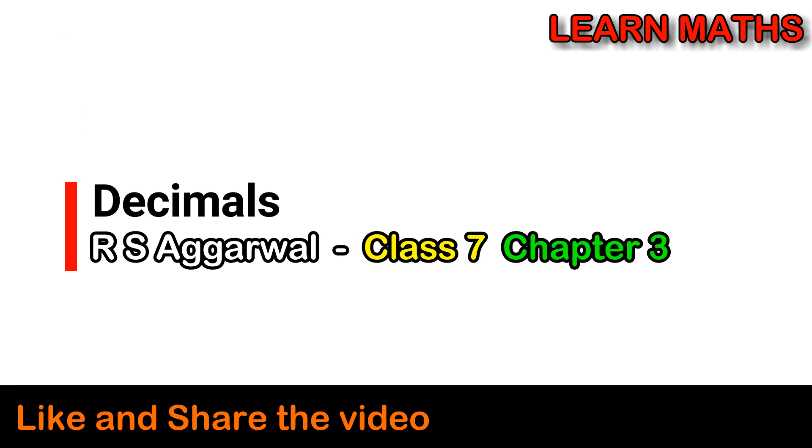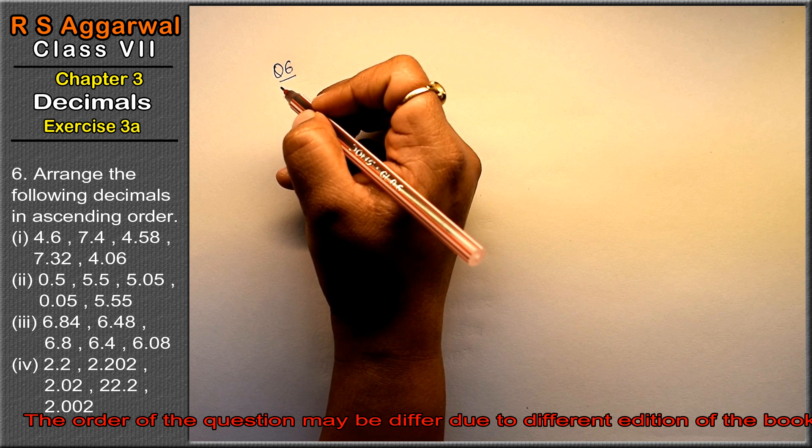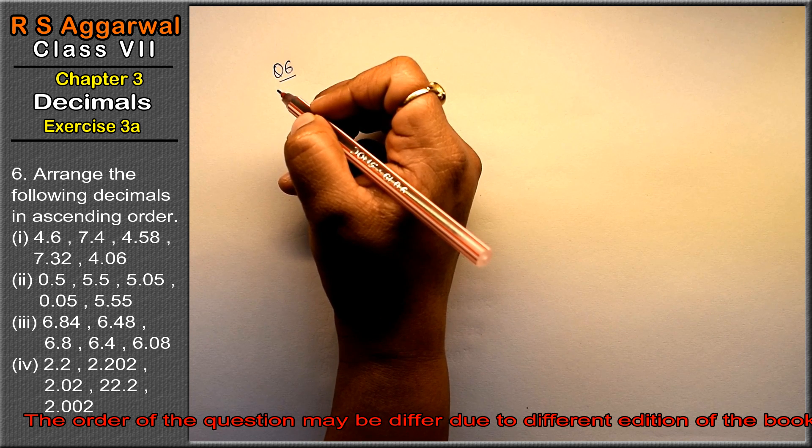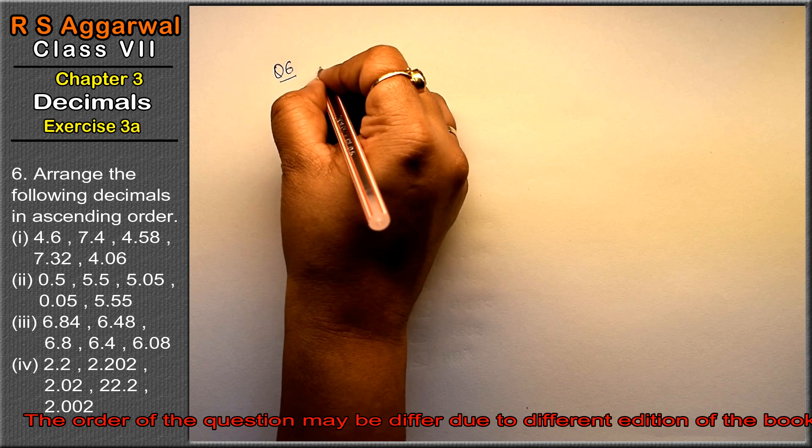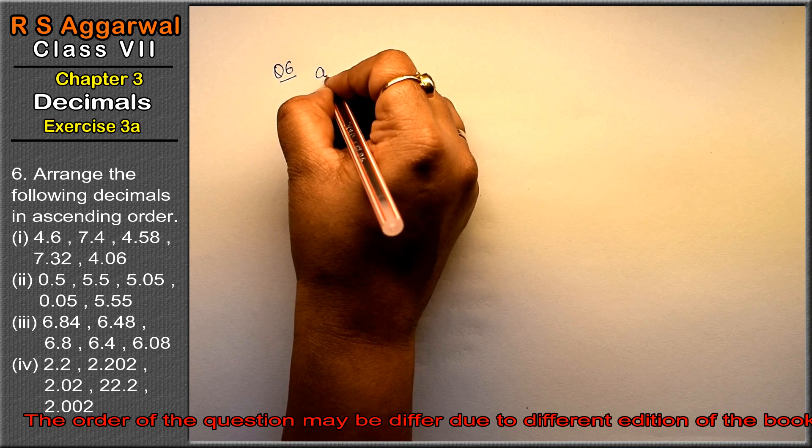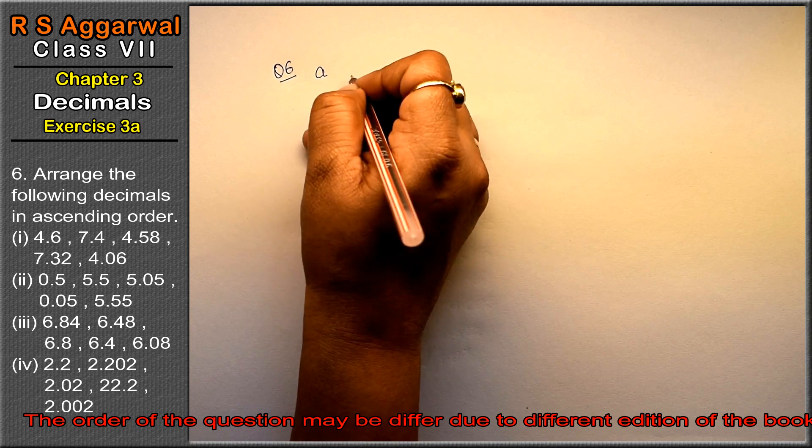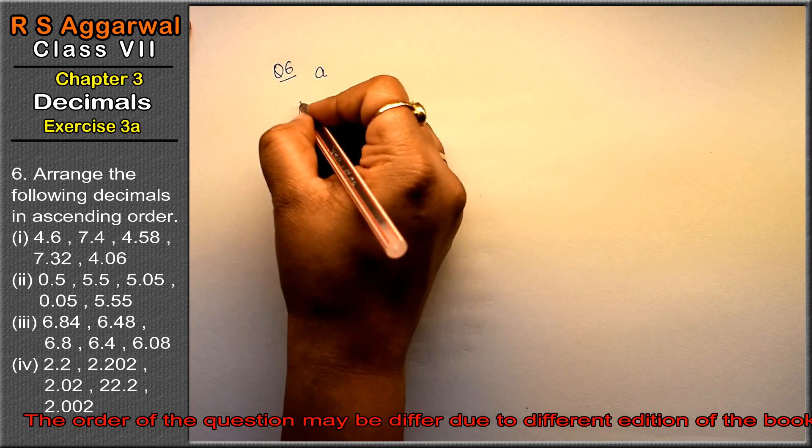Let's do question number 6 of exercise 3a on decimals. This asks us to arrange the following decimals in ascending order. Friends, ascending means from smallest to largest.